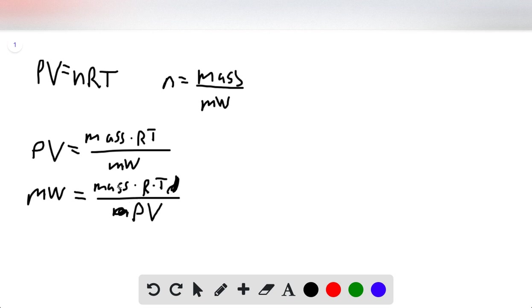We know that mass over volume equals density, so we can rewrite this as RTD for density over P for pressure.